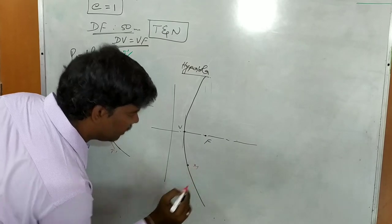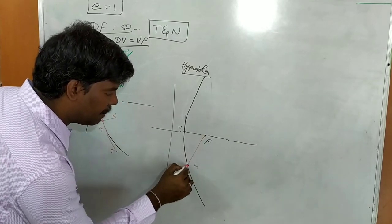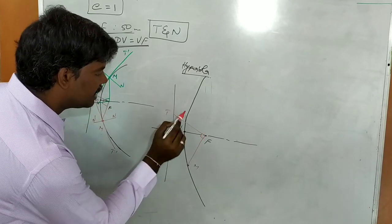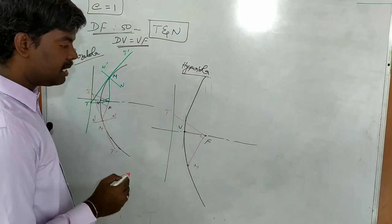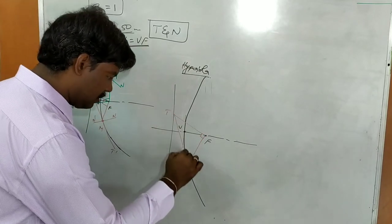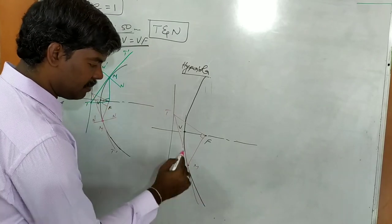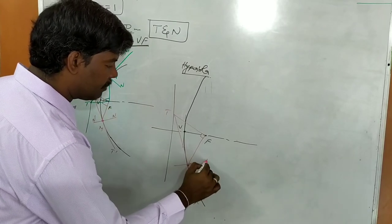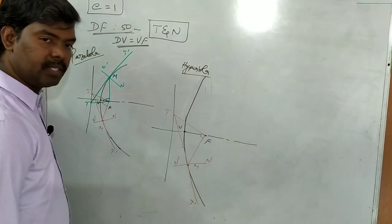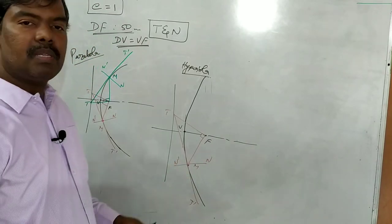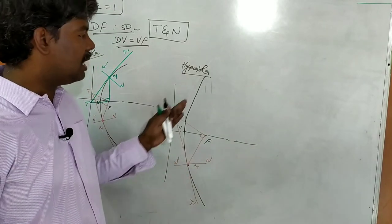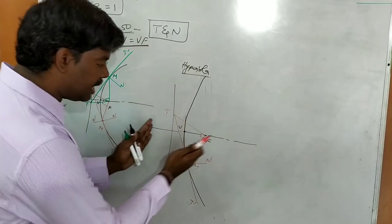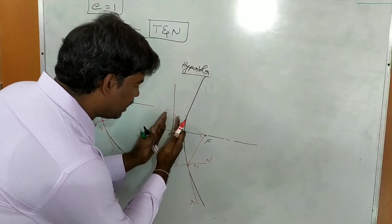On the hyperbola, consider point M. Join F and M, then draw a perpendicular line from F — it intersects the directrix at point T. Draw a straight line T-T-dash — that is the tangent. Draw the perpendicular to T-T-dash passing through M — that is the normal N-N-dash. Same procedure as parabola.